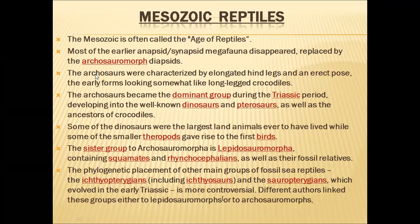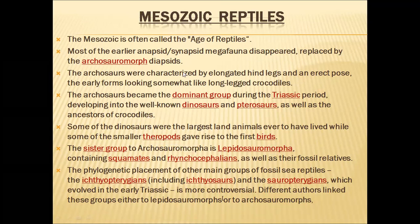The archosauromorphs or archosaurs were characterized by having elongated hind legs and an erect posture. Early forms of archosaurs looked somewhat like long-legged crocodiles. The archosaurs later became the dominant group during the Triassic period and developed into dinosaurs and pterosaurs, as well as the ancestors of crocodiles. Some of the smaller theropods later gave rise to the first birds, so birds were developed from the theropoda group of these reptiles.